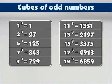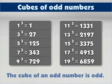Now look at the cubes of odd numbers. Cube of 1 is 1. Cube of 3 is 27. Cube of 5 is 125, and so on. Here we observe that the cube of an odd number is odd.